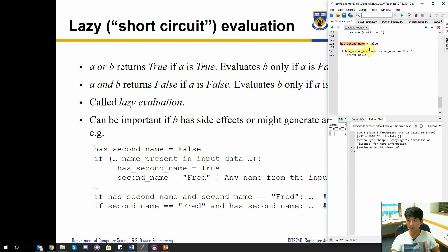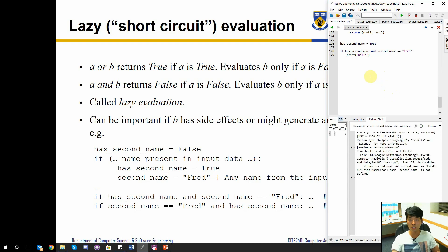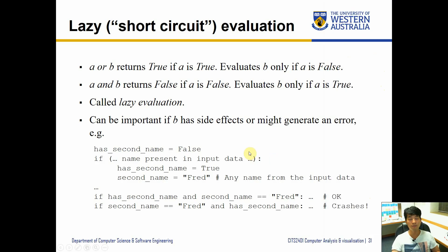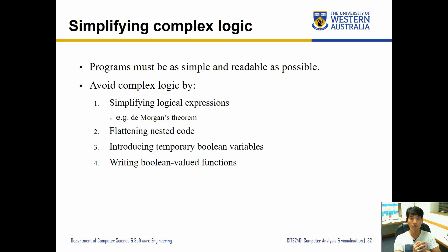If has_second_name is False, it skips the if condition entirely — we don't print anything and don't get an error. But if it's set back to True, since it's true it will check the second condition, but second_name hasn't been defined so you get an error. These are the scenarios where lazy evaluation may affect your logic, so it's important to check and double-check your logic to cover all scenarios like boundary cases.